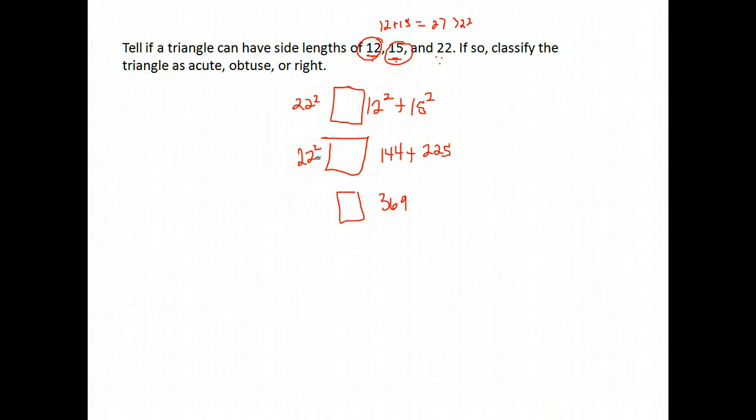Okay, and then 22 squared over there, on the other side, is 484. Now they're not the same, so I know it's not a right triangle, but is it obtuse or acute?